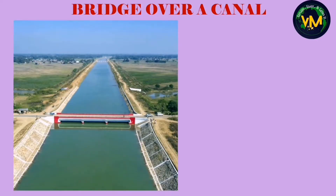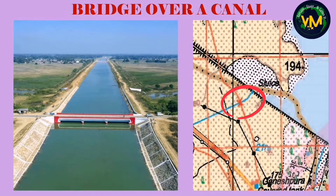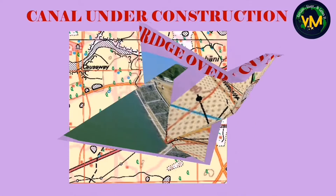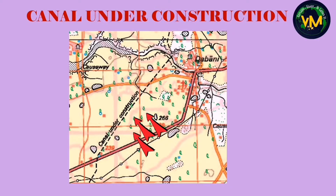In some maps we can see a bridge over a canal. The blue color line indicates a canal, and you can see the bridge symbol where the cart track is cutting through the canal. Canal under construction is usually written on a map over black broken lines, meaning the canal is still under construction.